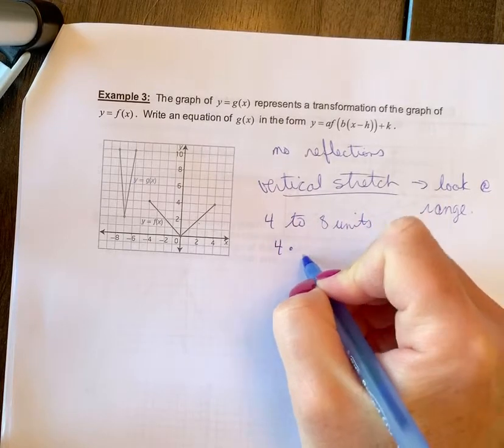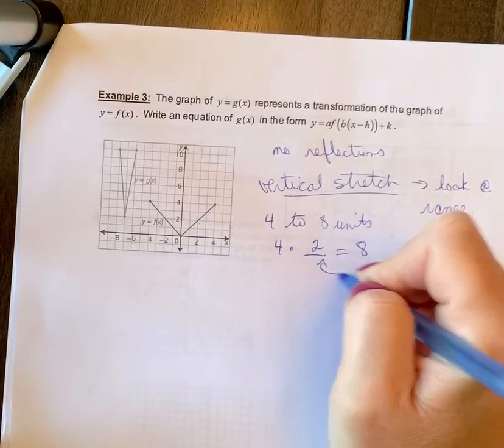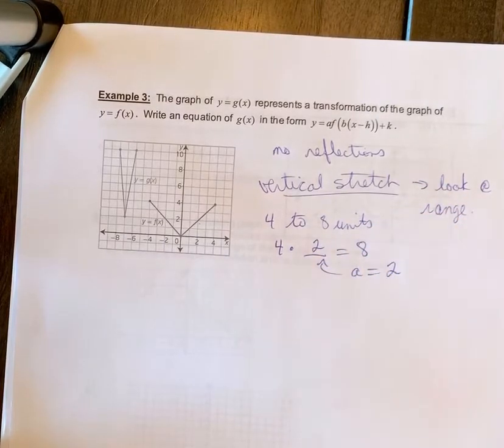So instead of writing it out in words like that, I want to know 4 times what gave me 8. What happened to those y coordinates? Well, they had to have been multiplied by 2. So that means I have an a value of 2. So my vertical stretch would tell me that there is by a factor of 2.